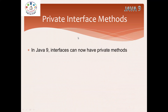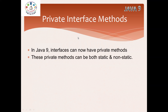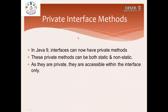until Java 1.8, in interfaces we can define abstract methods, default methods, and static methods. In Java 9 onwards, interfaces can have private methods. The private method can be a static private method and a non-static private method. When I say private, no one can access it outside —